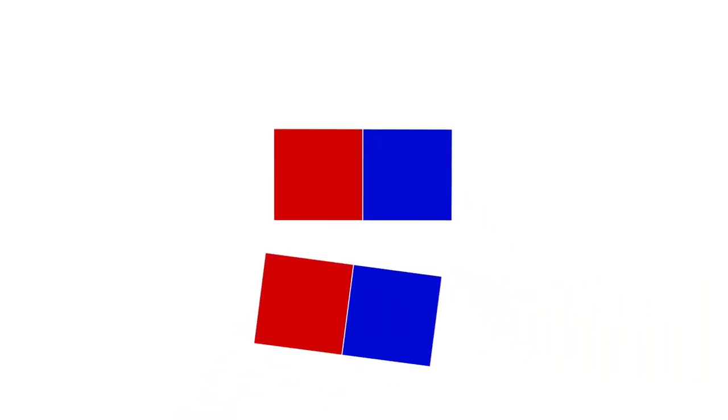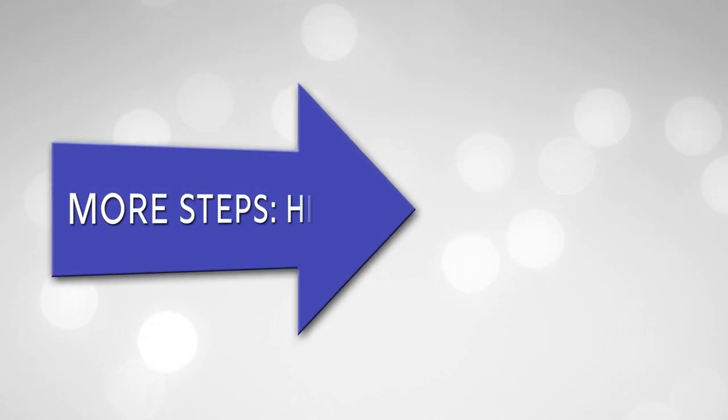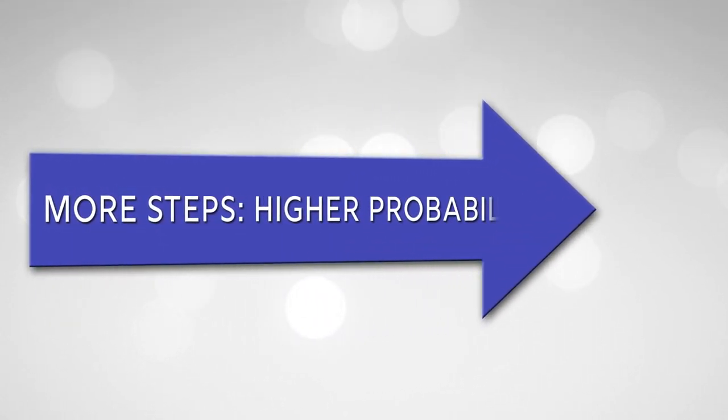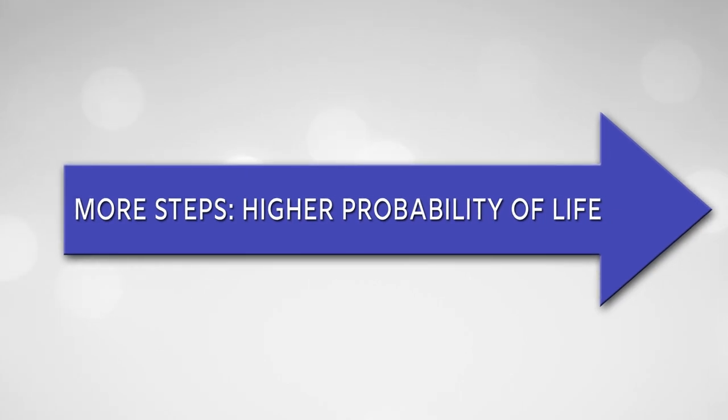This particular idea of molecular assembly was really born in math. Even though it's a chemical method, it was born out of the idea of thinking about building molecules in an algorithmic sense, and then recognizing that molecules derived from abiotic systems have far fewer steps necessary to make them than the molecules we associate with biology, which take many more steps.